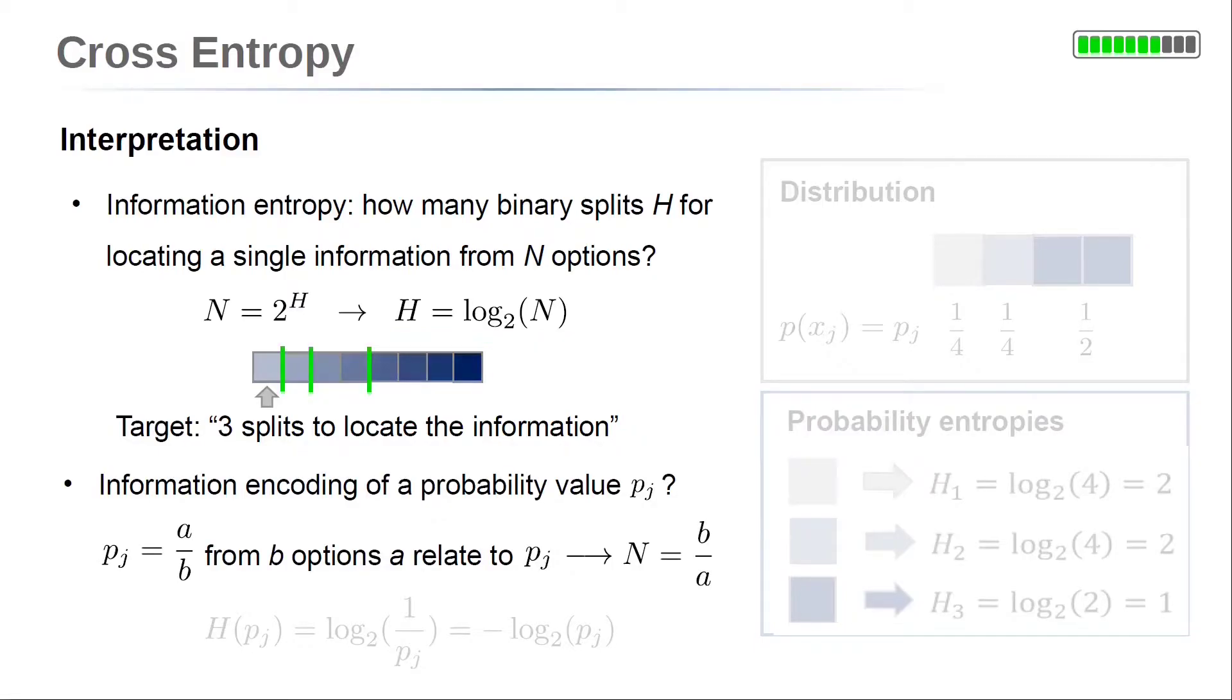So, how can we transfer this to probabilities? The probability value for a class J is denoted by PJ. This value can be written as a fraction, A over B, which means from B possibilities, A relate to class J. Or, in other words, from B options, A informations relate to class J. So, the number of relevant options capital N equals B over A in this case.